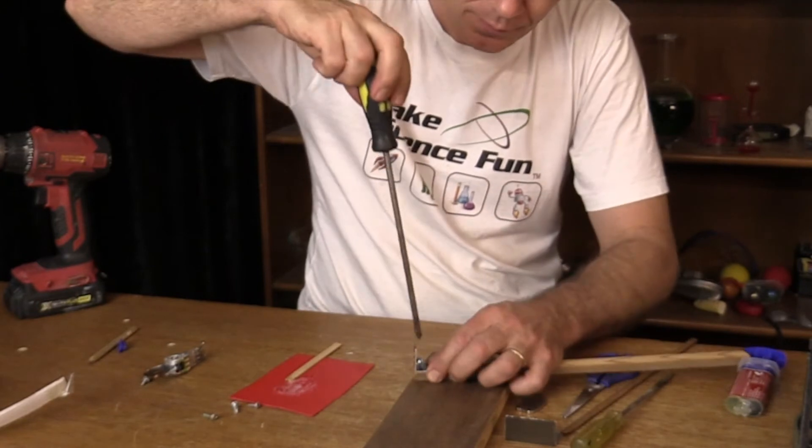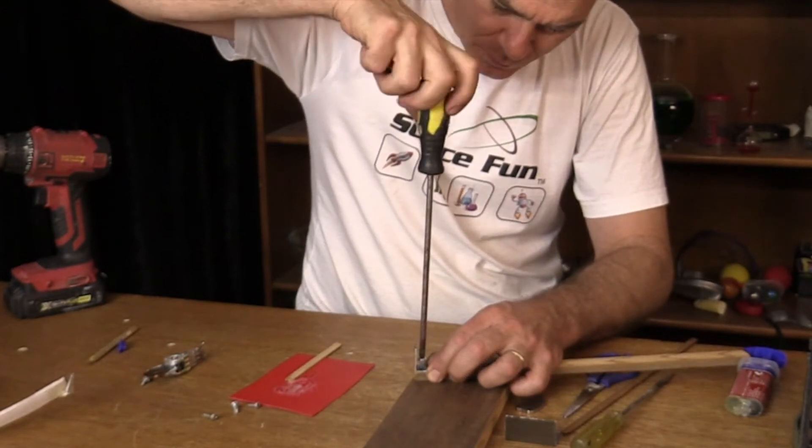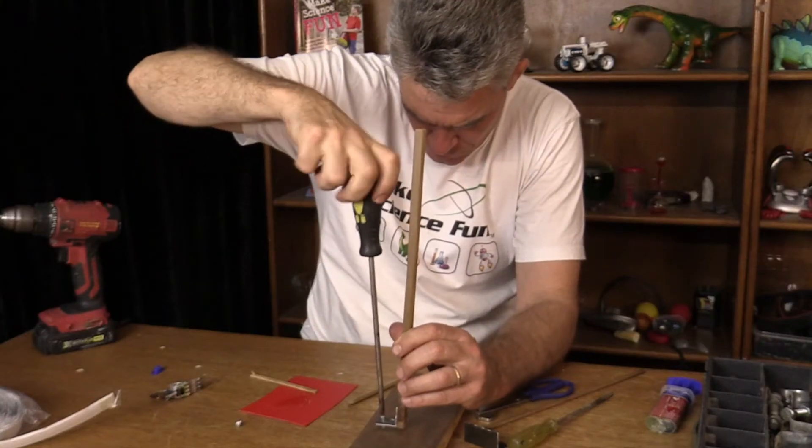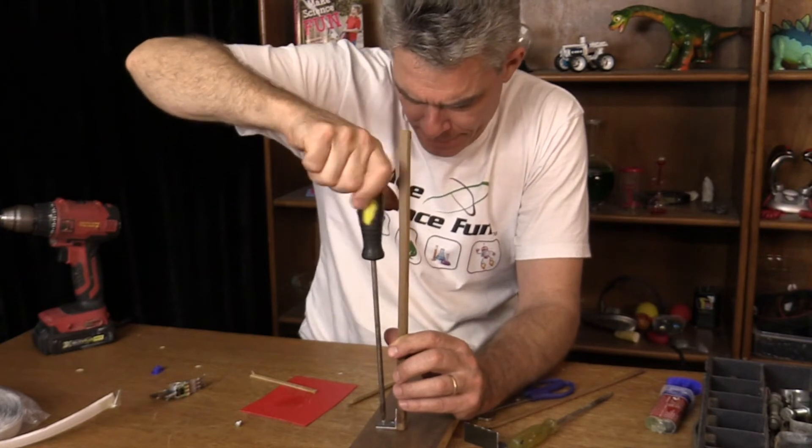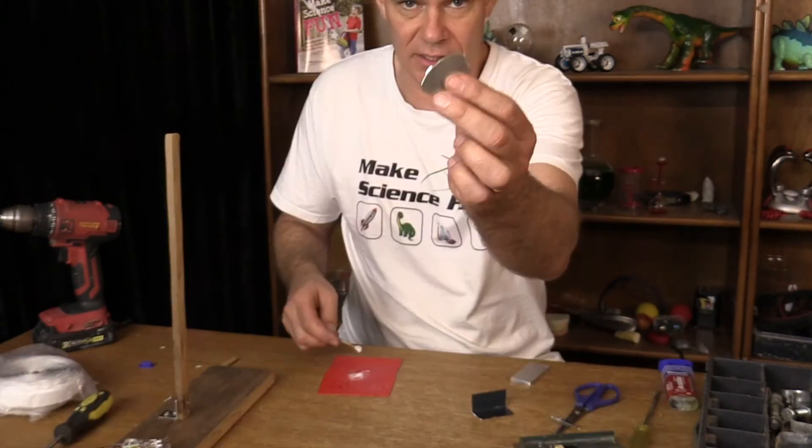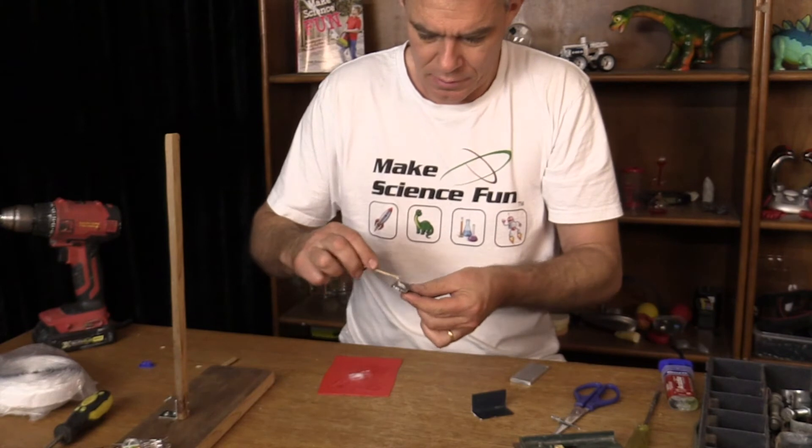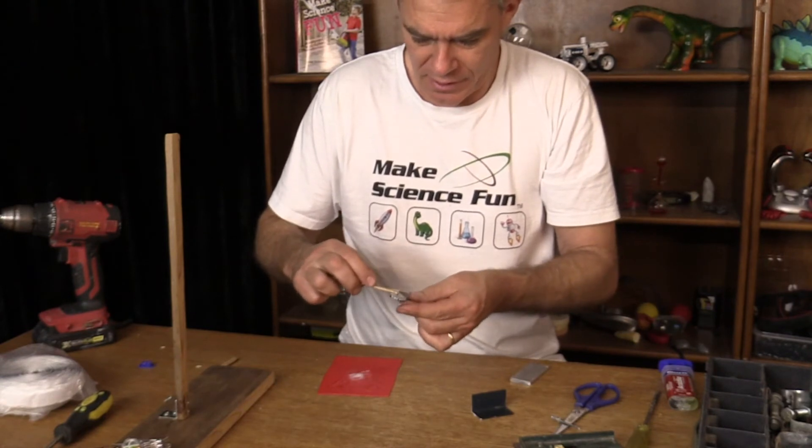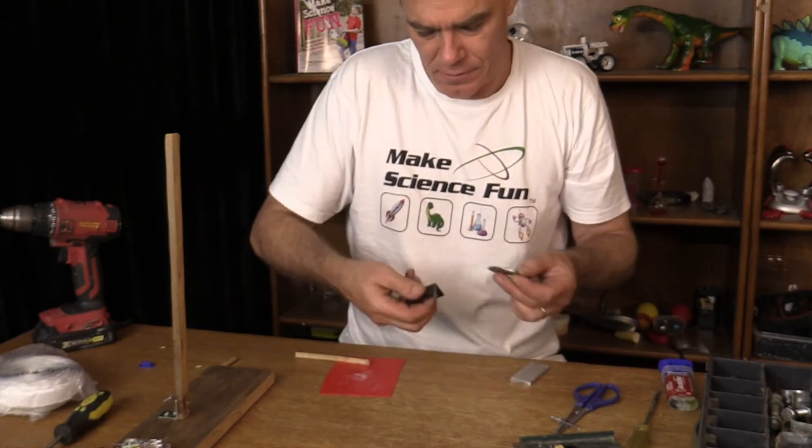One screw there. Here's my magnet. Glue it on the back of the magnet. Okay, that's not going to come off.